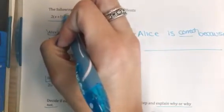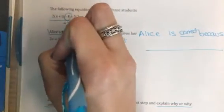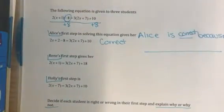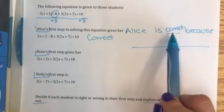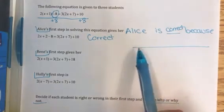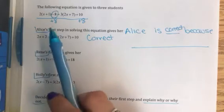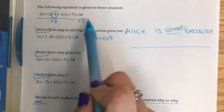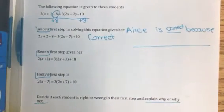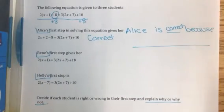When we look at Renee, Renee's first step is also correct because Renee's first step was to take this negative 8 and to add it to each side. So again, if we're using this sort of format, we would say Renee is correct because in the first step he added 8 to each side, making sure that he added in a place where he could combine like terms and got a new equivalent equation.